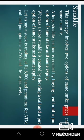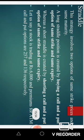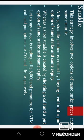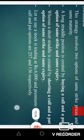One of them is the straddle. This strategy involves two options of the same strike price and same maturity. That means we take one call option and one put option with the same strike price and same expiry. A long straddle position is created by buying a call and a put option of the same strike and same expiry.